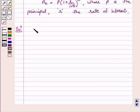Here P is given to us rupees 10,000. R is given to us. R is equal to 8%. Therefore,